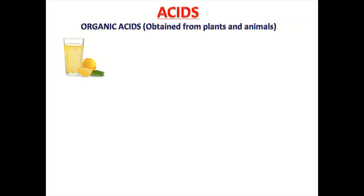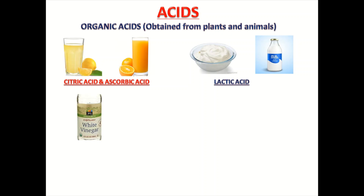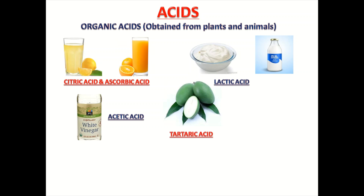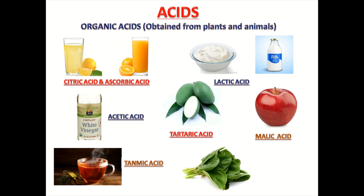Lemon juice and orange juice, mangoes have citric acid and ascorbic acid. Curd and milk have lactic acid. White vinegar has acetic acid. Unripe mangoes have tartaric acid. Apple has malic acid. Tea has tannic acid. Spinach leaves have oxalic acid.